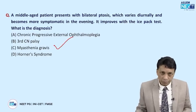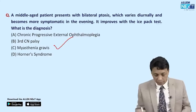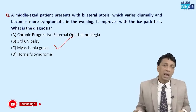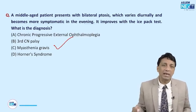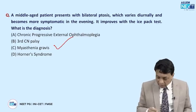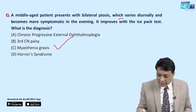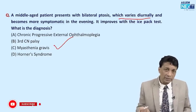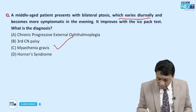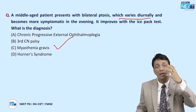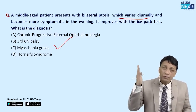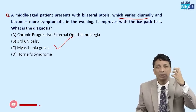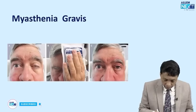Myasthenia gravis has two important groups: young ladies and old men. A middle-aged patient with bilateral ptosis — though it can be unilateral — is often the first presentation of ocular myasthenia, because the levator palpebrae superioris (LPS) is the first muscle damaged. The fluctuation with worsening of ptosis in the evening is very typical of myasthenia. It improves with the ice pack test because cooling the neuromuscular junction improves electrical transmission.